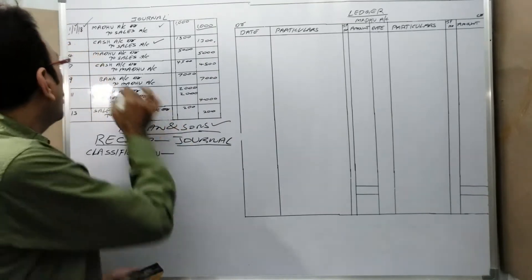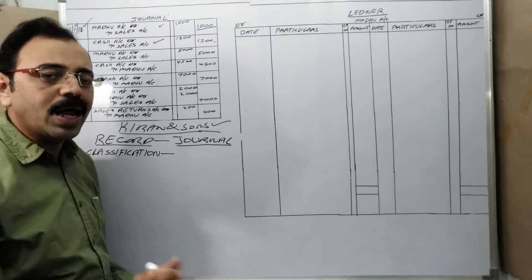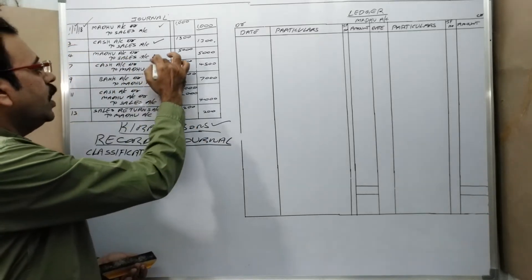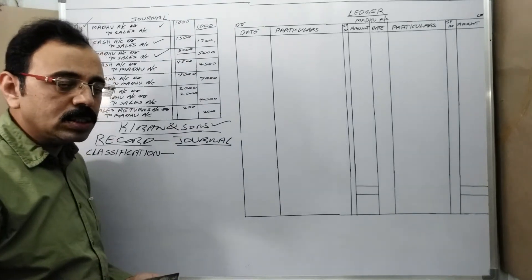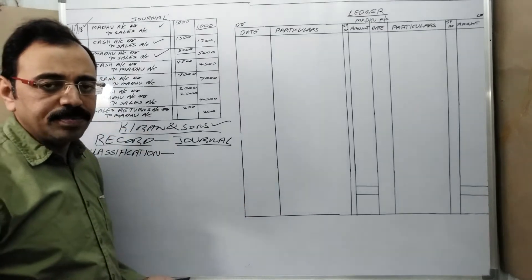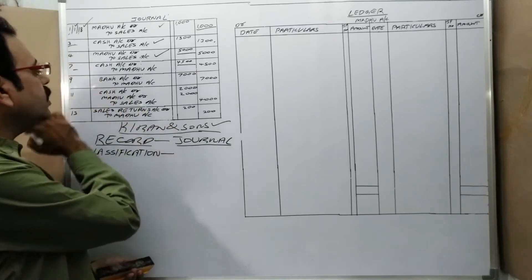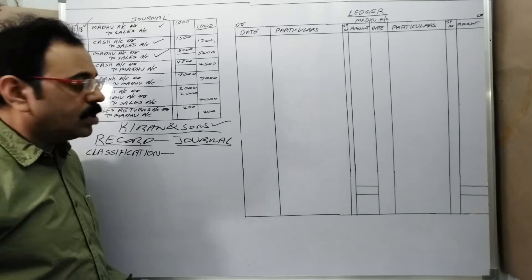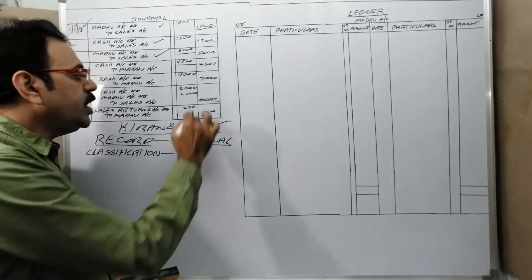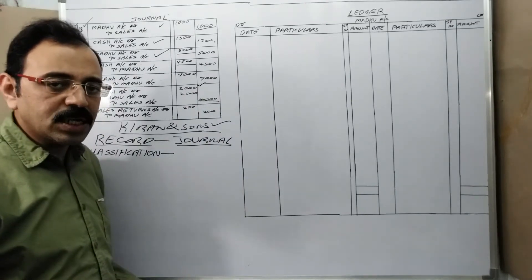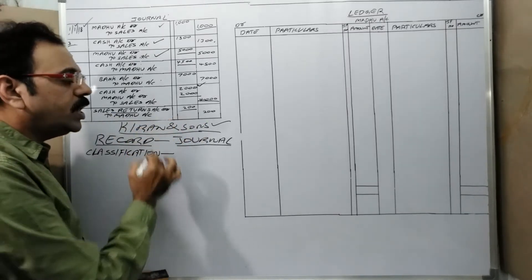In the 2nd transaction on 3rd date, the firm gave goods to Madhu and immediately Madhu paid cash to us, so Madhu is not liable. Then on 4th date, we again sold goods to Madhu on credit for 5000 rupees, making Madhu liable again. On 7th date, Madhu paid cash of 4,500 rupees - cash account debit to Madhu account. On 9th date, Madhu issued a check. On 11th date, we sold 4000 worth of goods to Madhu, of which he paid 2000 rupees cash immediately and 2000 rupees is on credit.